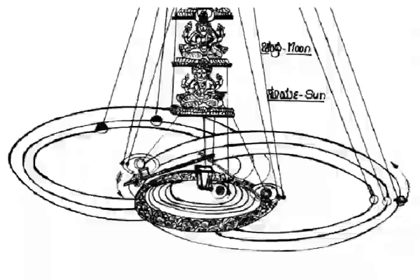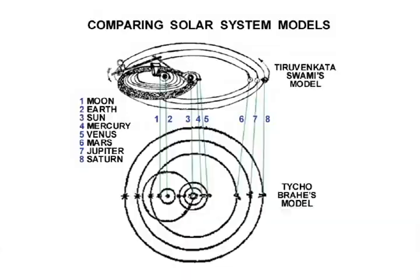Tirovankata's model exactly matches the geocentric model of Tycho Brahe. In fact, this is the natural way to compare Bhumandala with the planetary orbits.